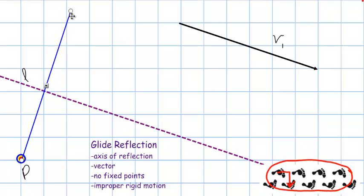So I need to reflect P across L right along that blue line. So this point I'm going to call an intermediate point. We'll call it P star. And that's the first step.